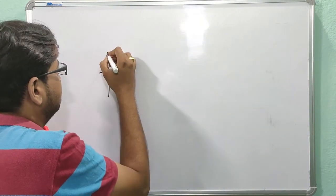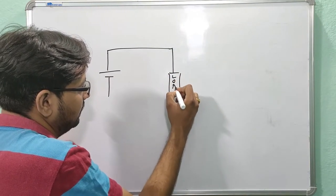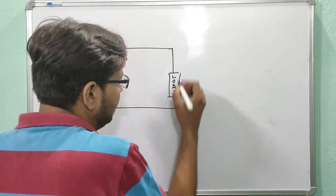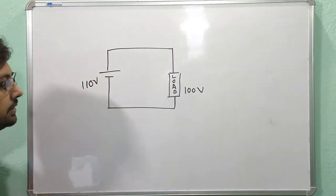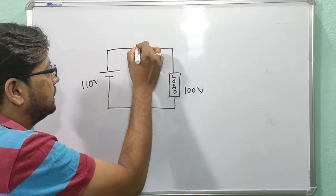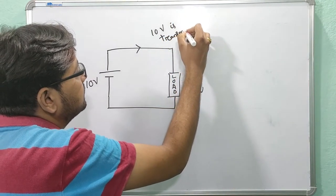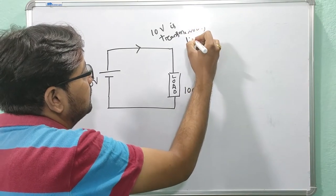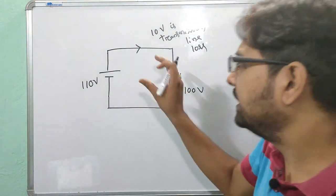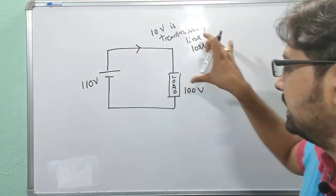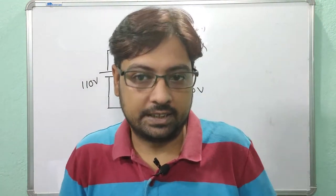Why did he generate 110 volt DC? Because they had a DC supply and a load — the load being an incandescent lamp rated at 100 volts. The supply was 110 volts, and there were transmission line losses of around 10 percent — approximately 10 volts. So he transmitted 110 volts and the load required 100 volts, with the 10-volt difference accounting for transmission line losses.